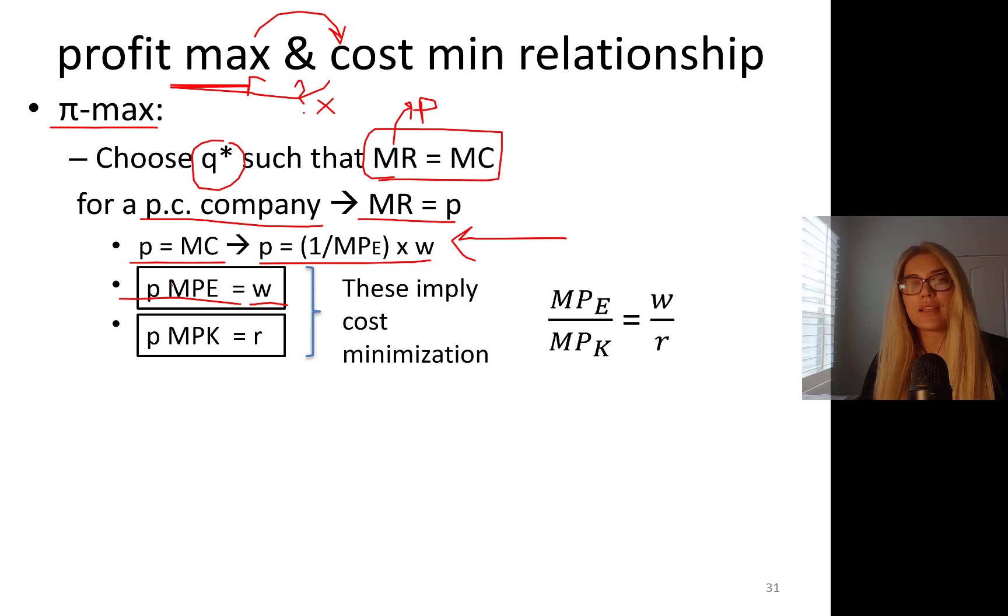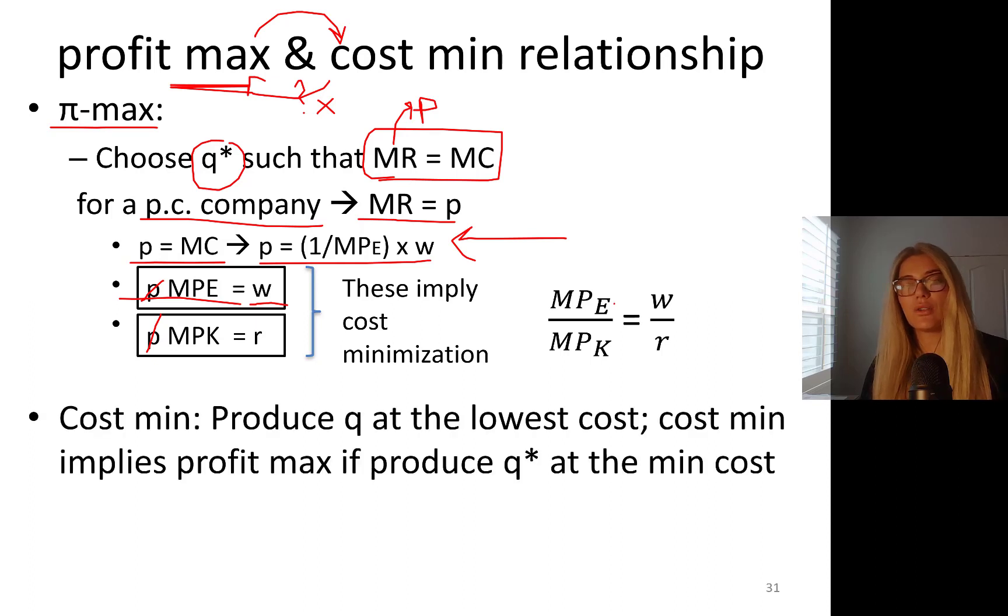You get the equality of one dollar spent on labor bringing us the level of output exactly equal to one dollar when you spend it on capital. This is the equimarginal principle where MPE/w = MPK/r, which implies cost minimization.